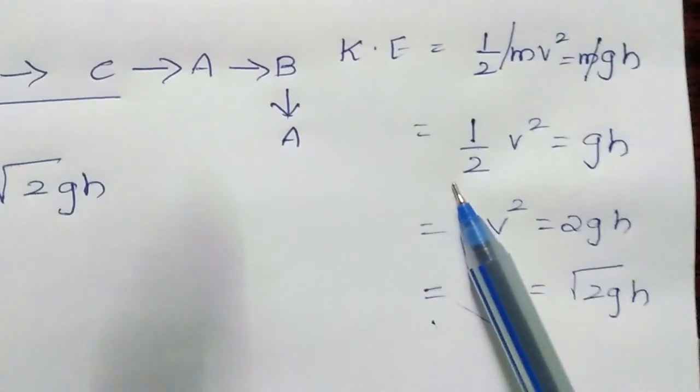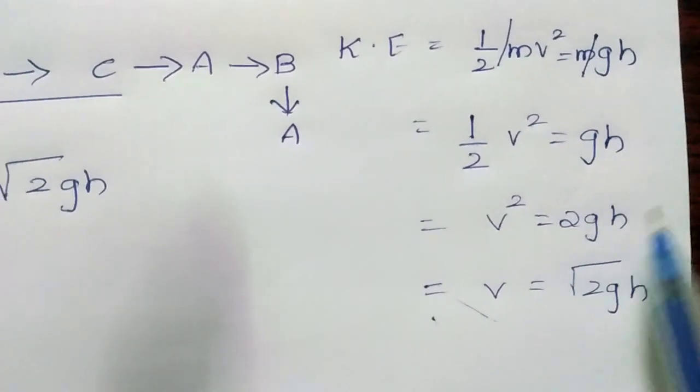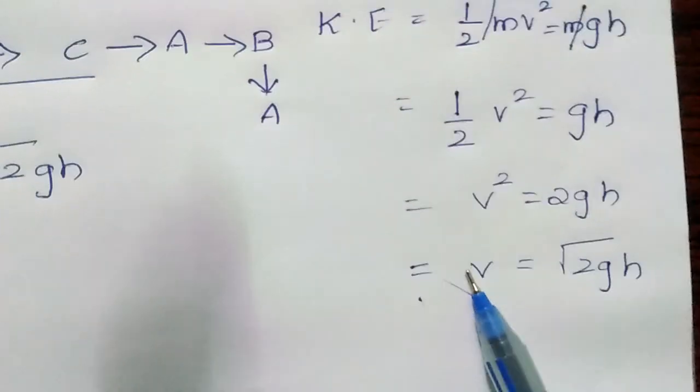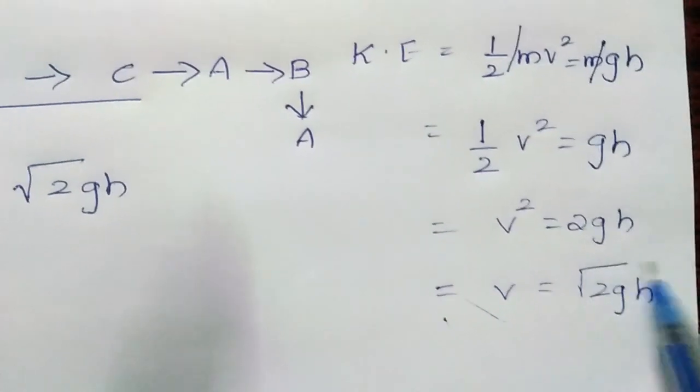Transferring this one-half to the right side, which means 2 times gh, results in v squared equals 2gh. And v equals the square root of 2gh.